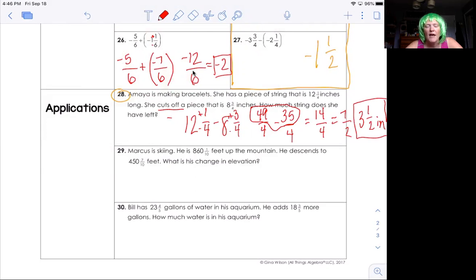I'm just going to help you set up the next two. We're not going to solve them, but I think setting it up can be hard. So let's just talk about it. Marcus is skiing. Another skiing example. He's 860 and one tenth feet up the mountain. That's weird. That's very precise. He descends to 450 and seven tenths feet. What is his change in elevation?